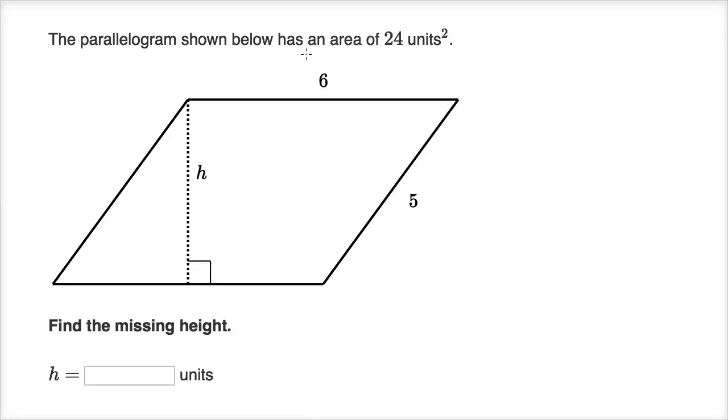The parallelogram shown below has an area of 24 units squared, or square units. Find the missing height.